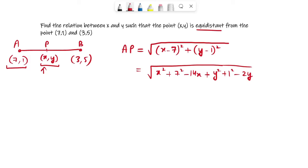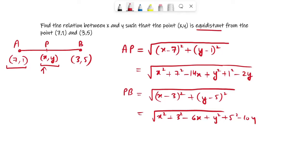This is what AP is equal to. Now we will find PB. For PB the equation is √[(x-3)² + (y-5)²]. So you have x² + 3² - 6x + y² + 5² minus 10y.